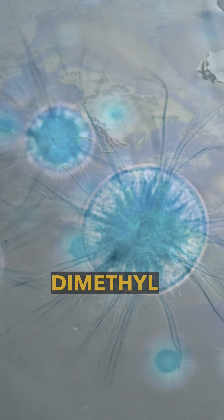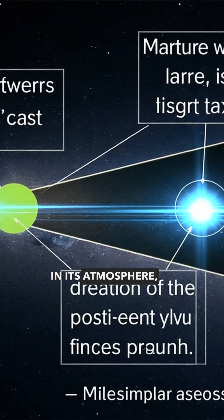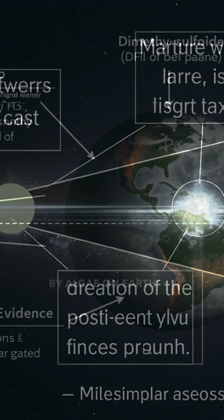scientists detected dimethyl sulfide (DMS) in its atmosphere, a molecule produced by algae on Earth.